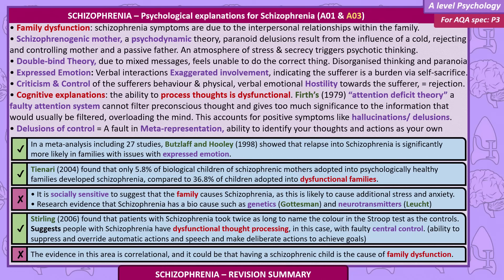Delusions of control result from a fault in meta-representation — the ability to identify your thoughts and actions as your own. In a meta-analysis of 27 studies, Butzlaff and Hooley showed that relapse into schizophrenia is significantly more likely in families with issues of expressed emotion. Tienari found that only 5.8% of biological children with schizophrenic mothers adopted into psychologically healthy families developed schizophrenia, compared to 36.8% of those adopted into dysfunctional families. Research also supports a biological cause, such as genetics (Gottesman) and neurotransmitters (Lachette).